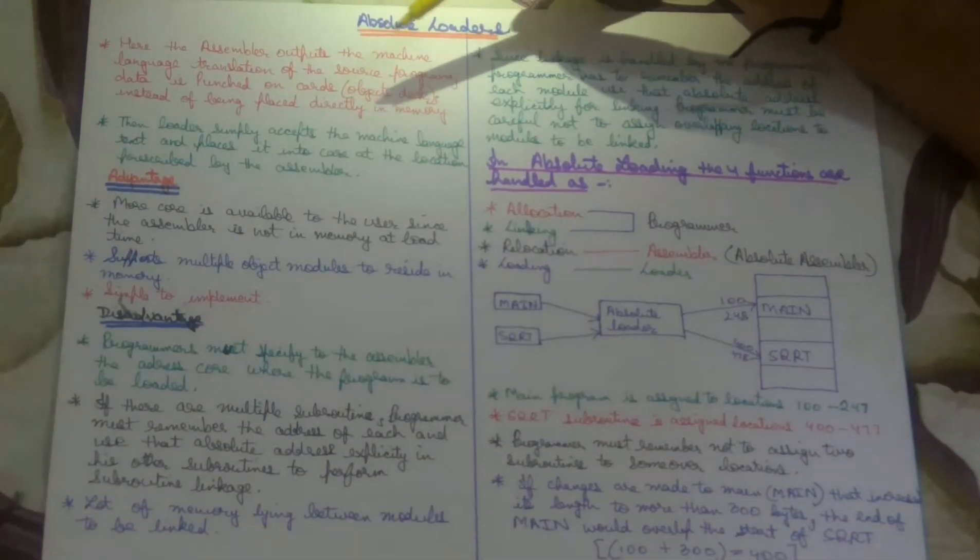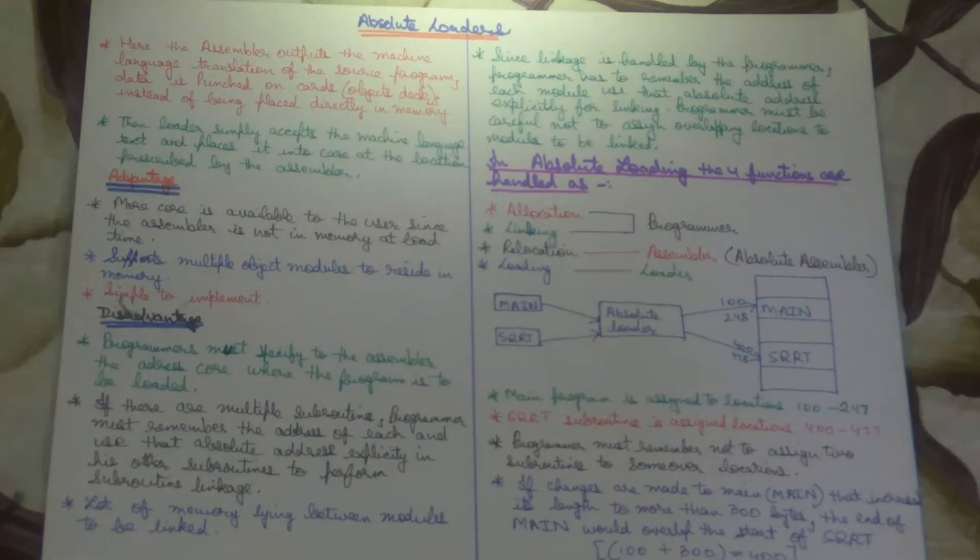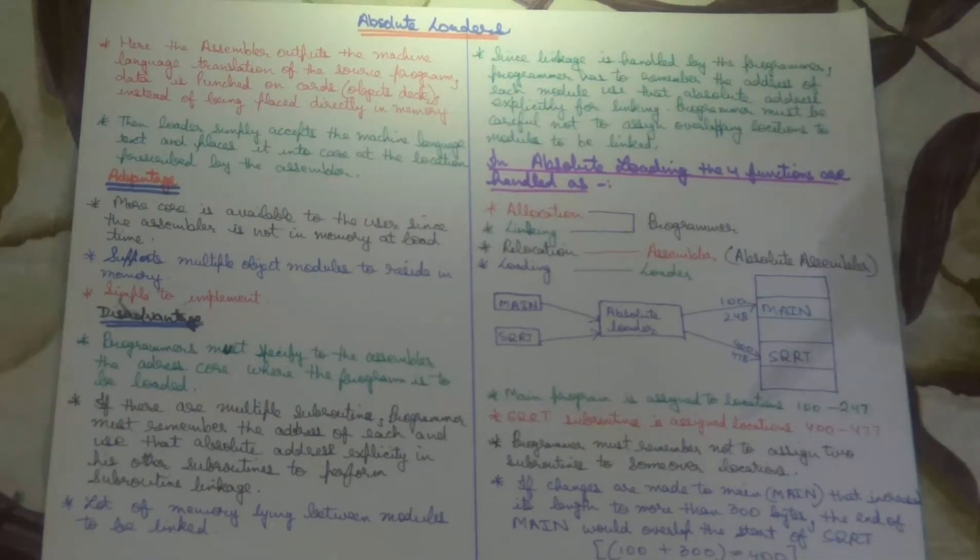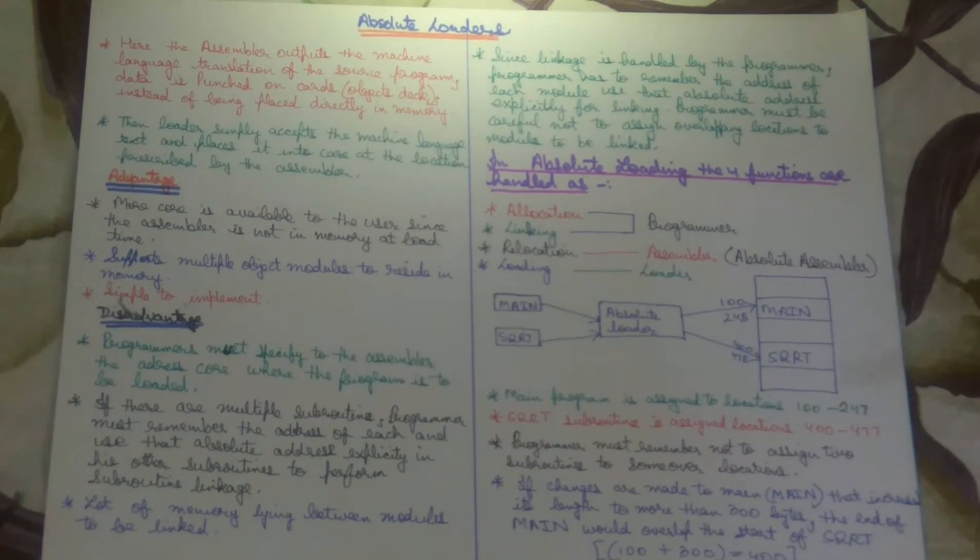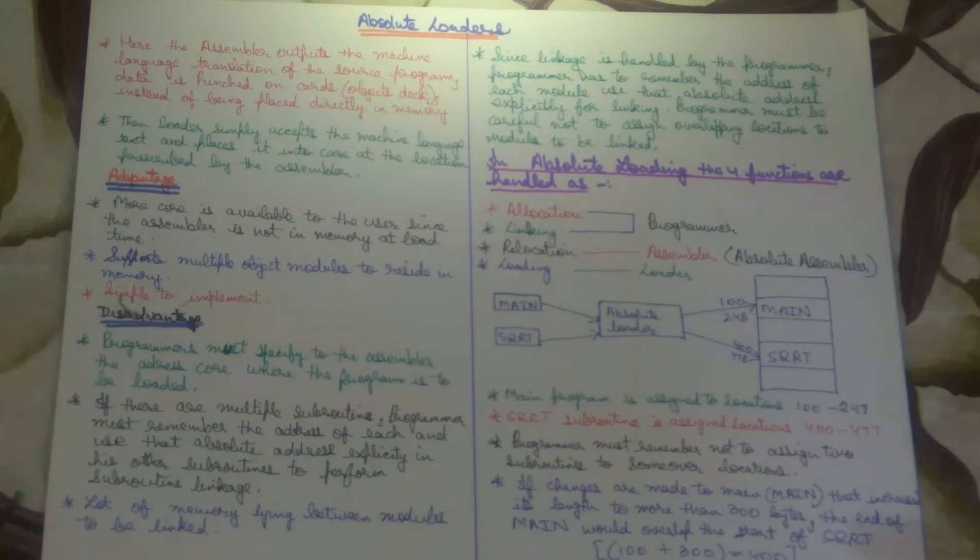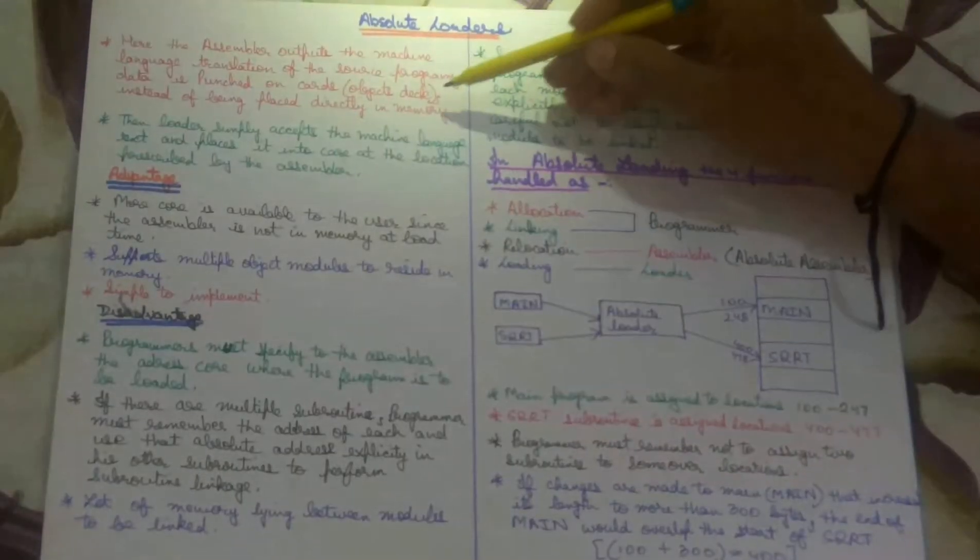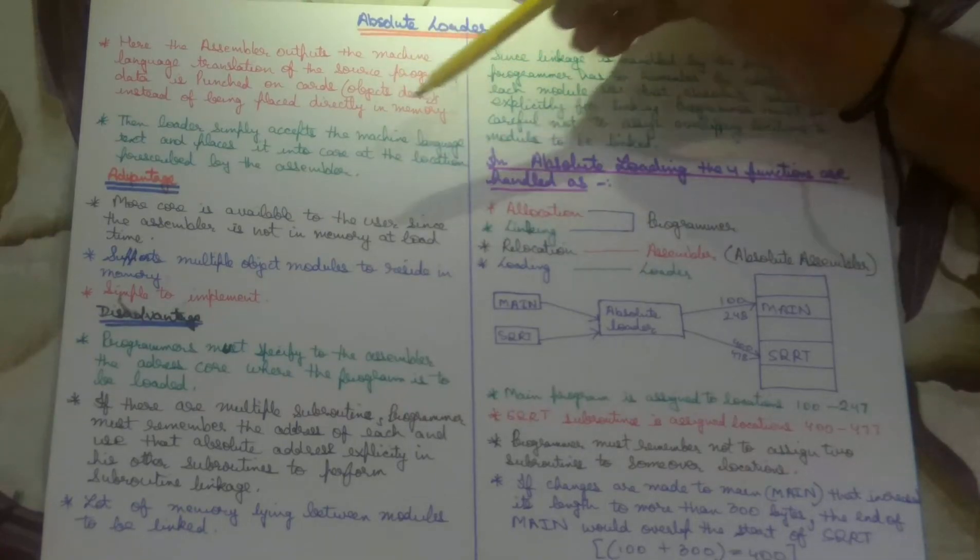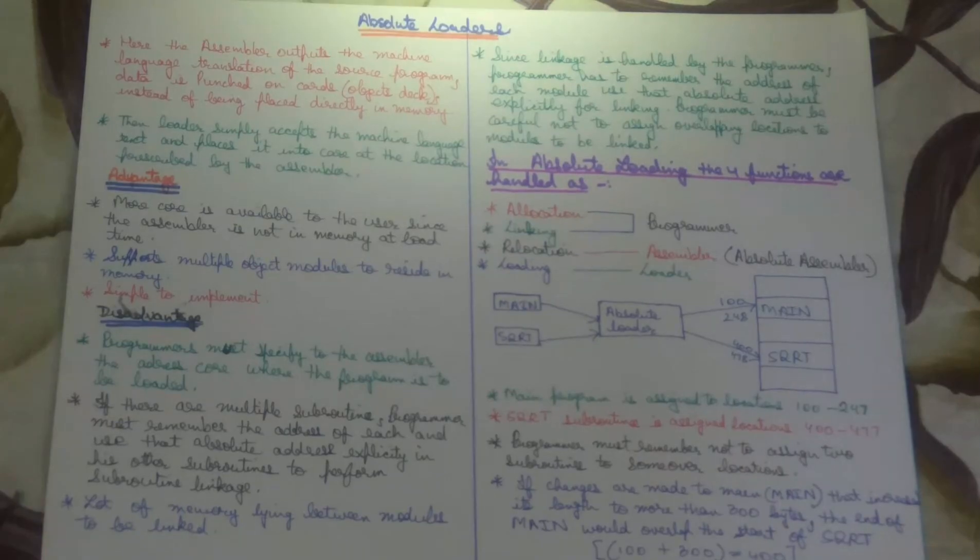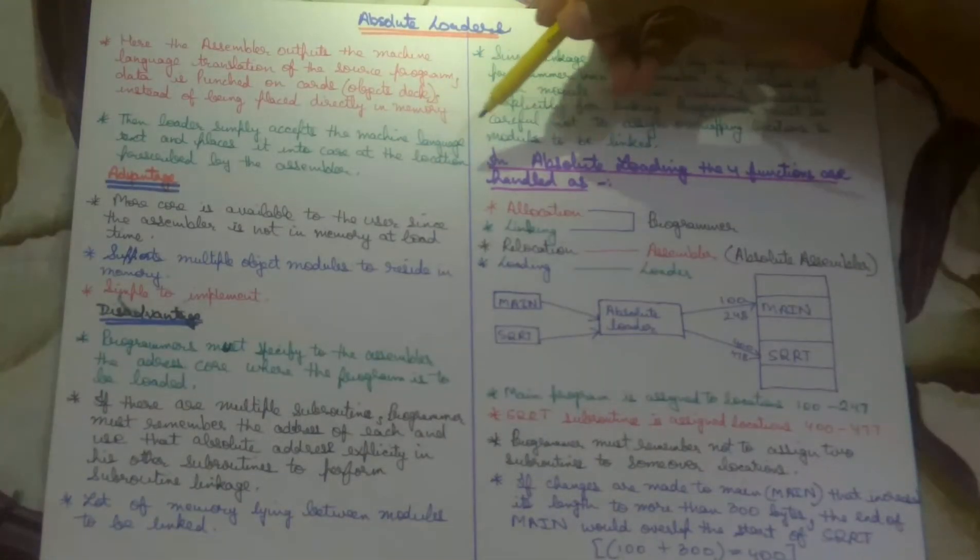Here the assembler outputs the machine language translation of the source program, which is converted to the output. The data is stored on cards, and the object deck instead of being placed directly into memory. The loader is in two steps. The loader simply accepts the machine language text and places it into the pool at the location prescribed by the assembler.